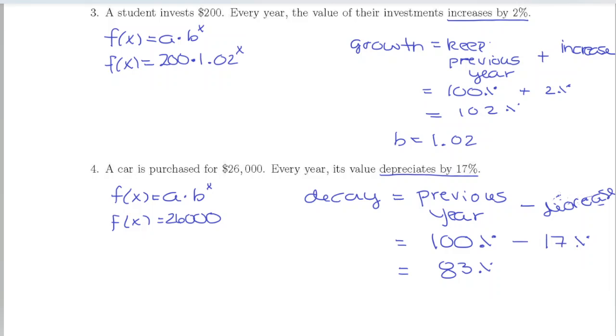Our b value is going to be the decimal form of that, which is 0.83, so we'll have times 0.83 to the x.